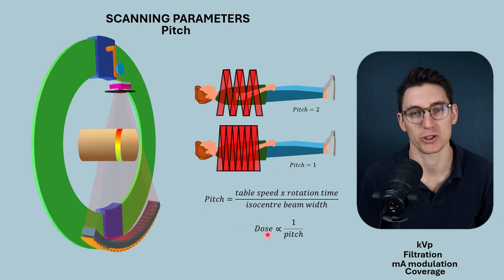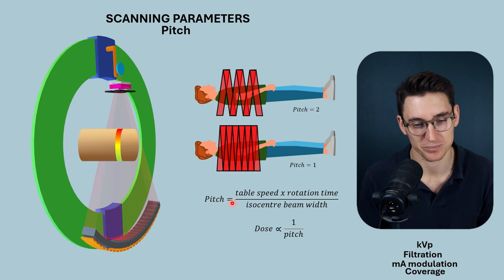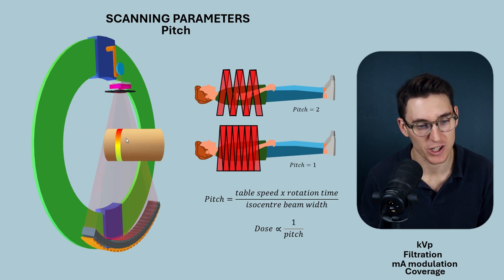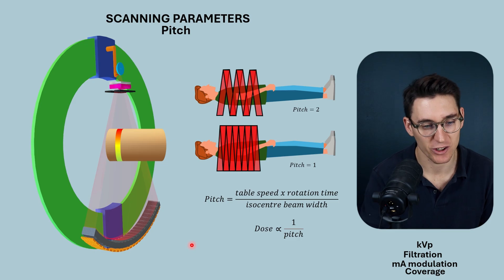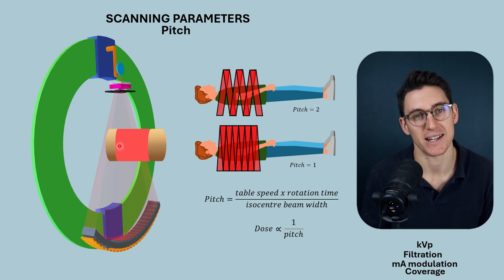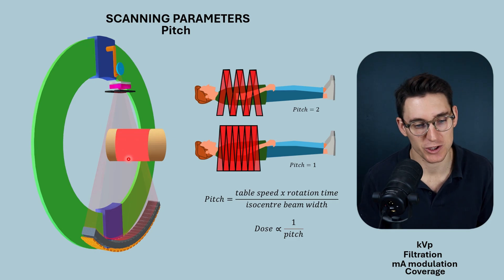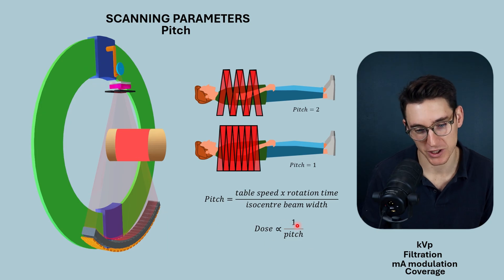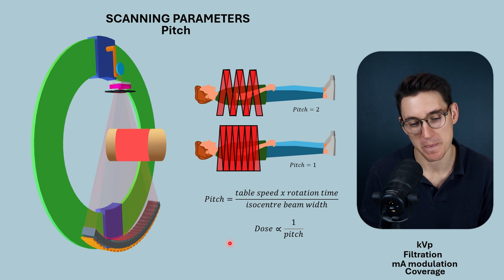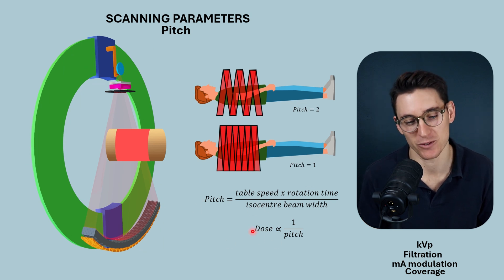Dose is inversely proportional to pitch. The slower we move the patient through the scanner, the more they're going to be exposed to ionizing radiation for a specific coverage, and the lower the pitch is going to be. It's important to remember this dose-pitch relationship, but also important to remember how changing each of these parameters influences pitch and ultimately dose — a classic exam question.